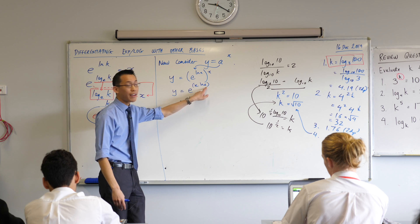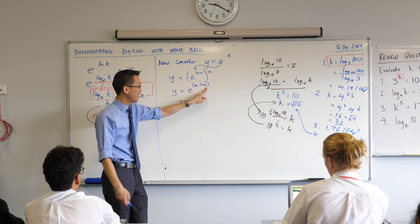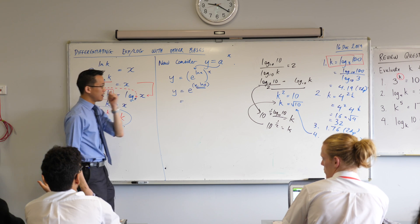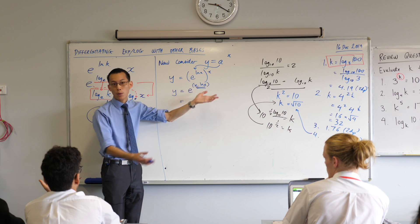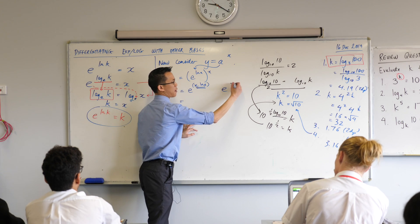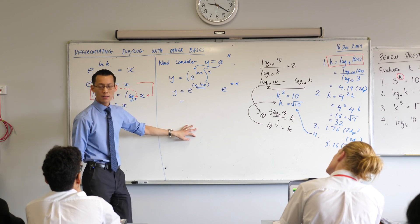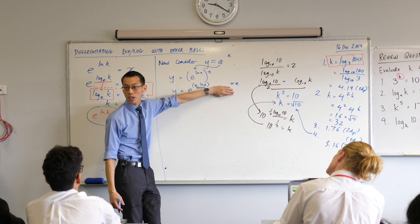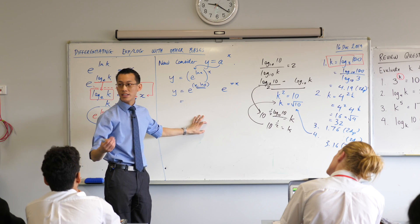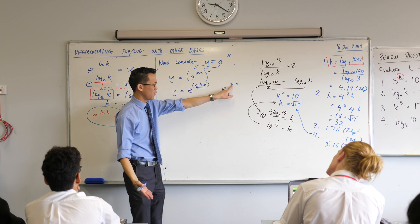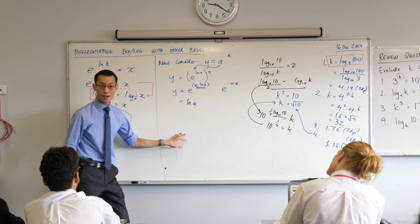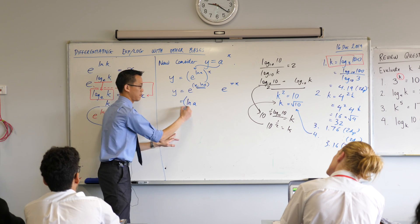The inside function is that thing in the power — it's x times log a. Now, a is just a number, so log a is also just some other number. If I gave you e to the power of 5x, the derivative of 5x is just 5. If I gave you e to the power of π x, π is a weird-looking number but it's still just a number, so the derivative would just be π. Log a — put in log 2 or log 5 or whatever, it's just another weird-dressed-up number. So the derivative of the inside function is log a.